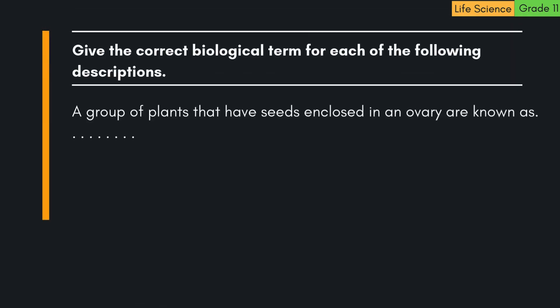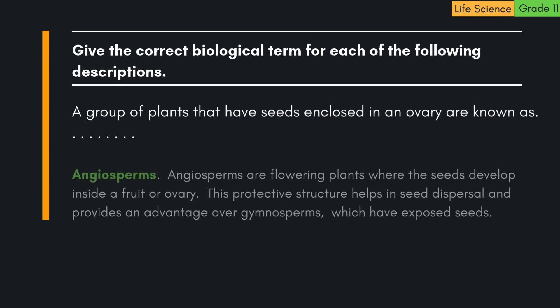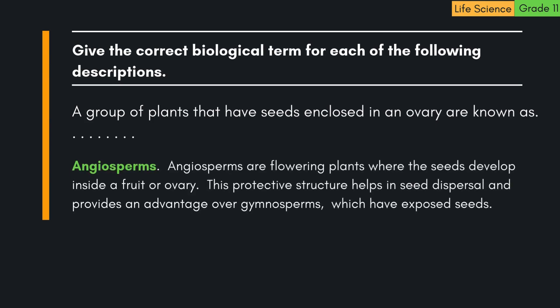A group of plants that have seeds enclosed in an ovary are known as angiosperms. Angiosperms are flowering plants where the seeds develop inside a fruit or ovary. This protective structure helps in seed dispersal and provides an advantage over gymnosperms, which have exposed seeds.